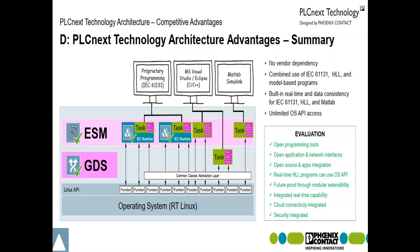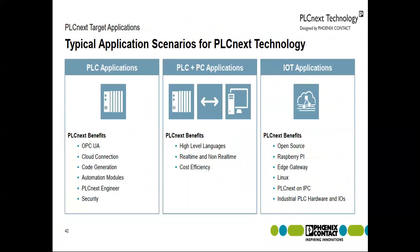Two key services inside PLCnext are ESM and GDS. ESM is the Execution Synchronization Manager — a service inside the PLC for allocating tasks. When writing code in ladder logic, that's one task; writing in C++ is another task. When these two different platform languages want to communicate with each other, they use the common open-port data exchange called GDS — the Global Data Space — to communicate with each other. The benefits of PLCnext include OPC UA integration, cloud connectivity, code generation, security, high-level language support, real-time and non-real-time processing, and cost effectiveness.